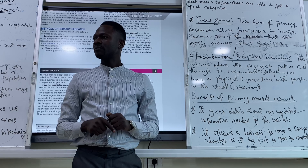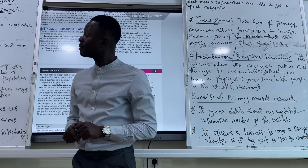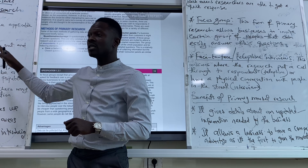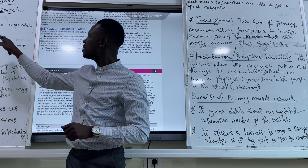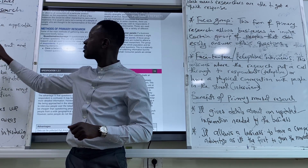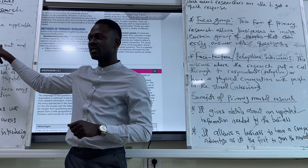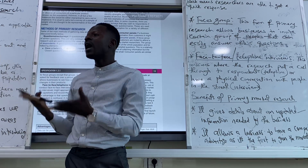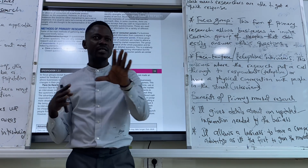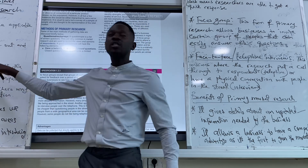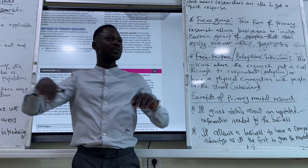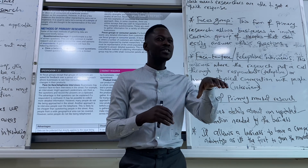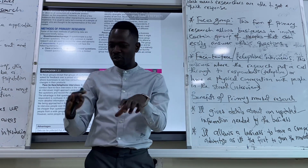A student asks: if everyone has secondary data, why don't they just use it? Secondary data may not be applicable for certain businesses. The third point is that some businesses can't use secondary information because they need information of now — current, specific information that simply doesn't exist yet.